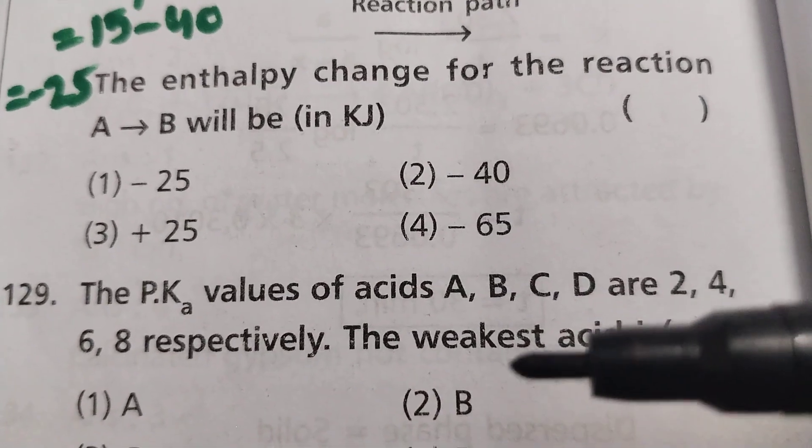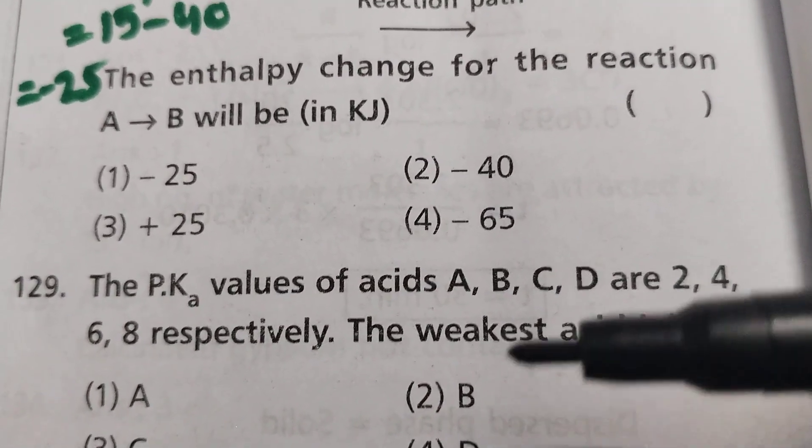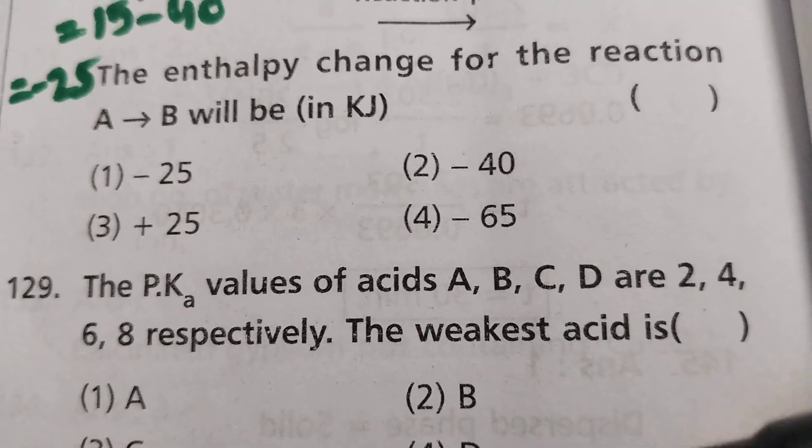The pK values of acids A, B, C, D are 2, 4, 6, 8 respectively. The weakest acid is...? A very short trick for you.